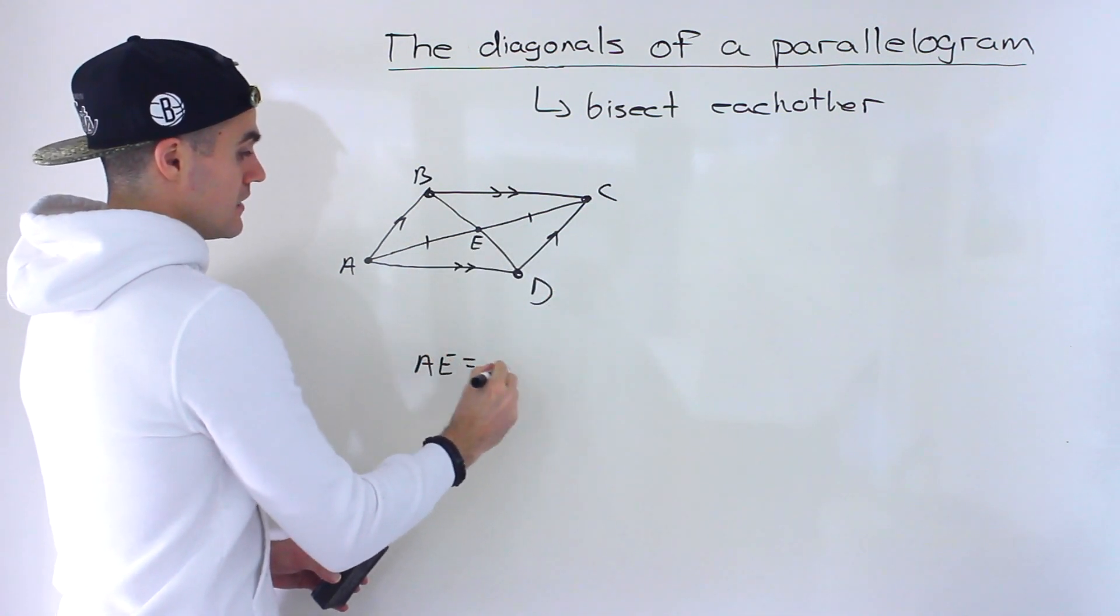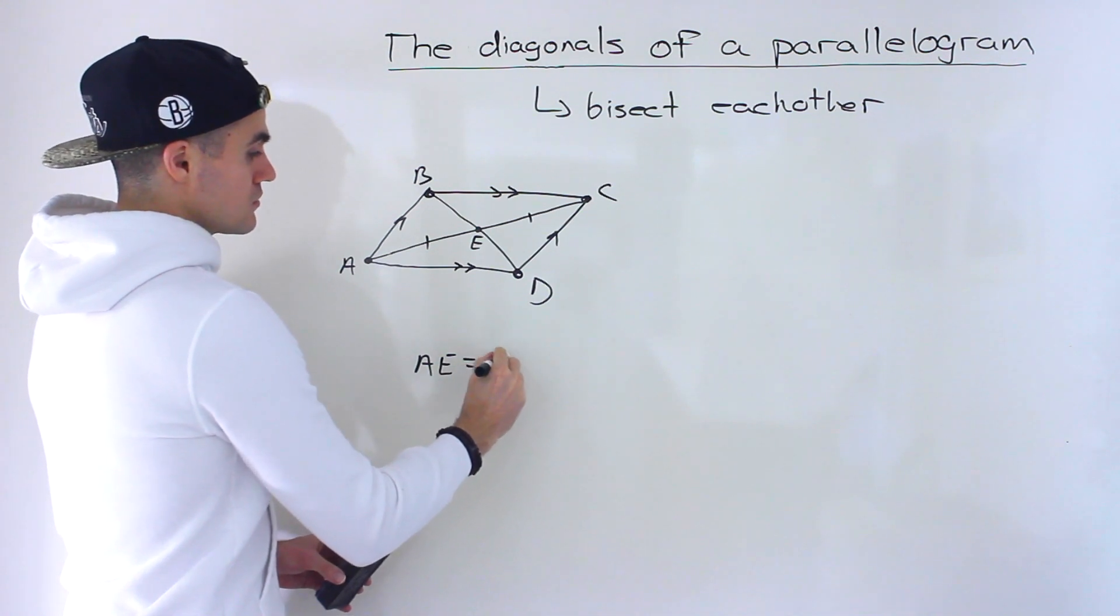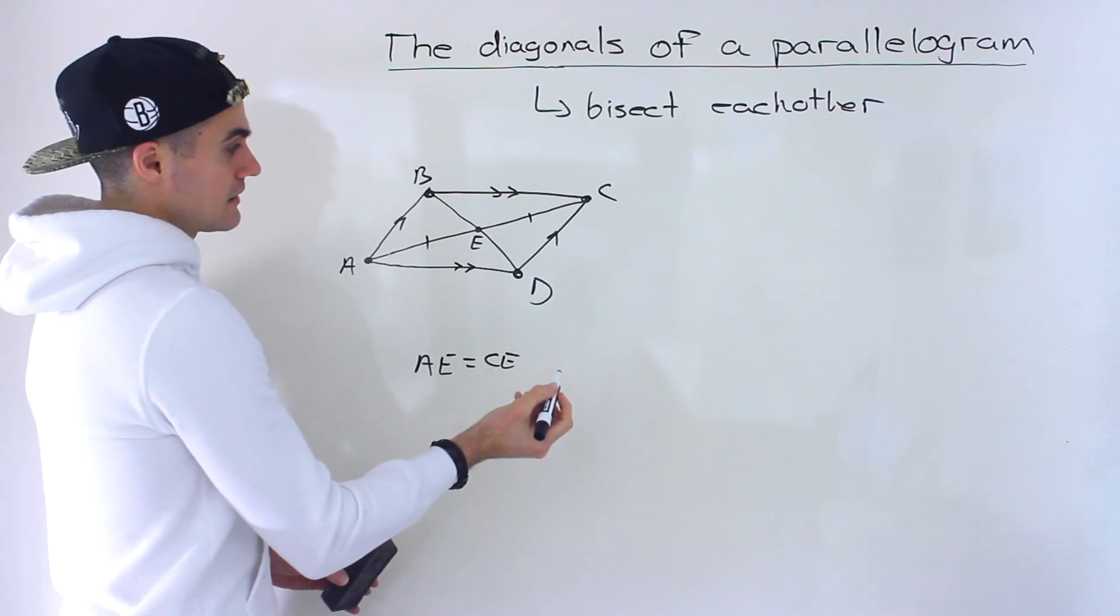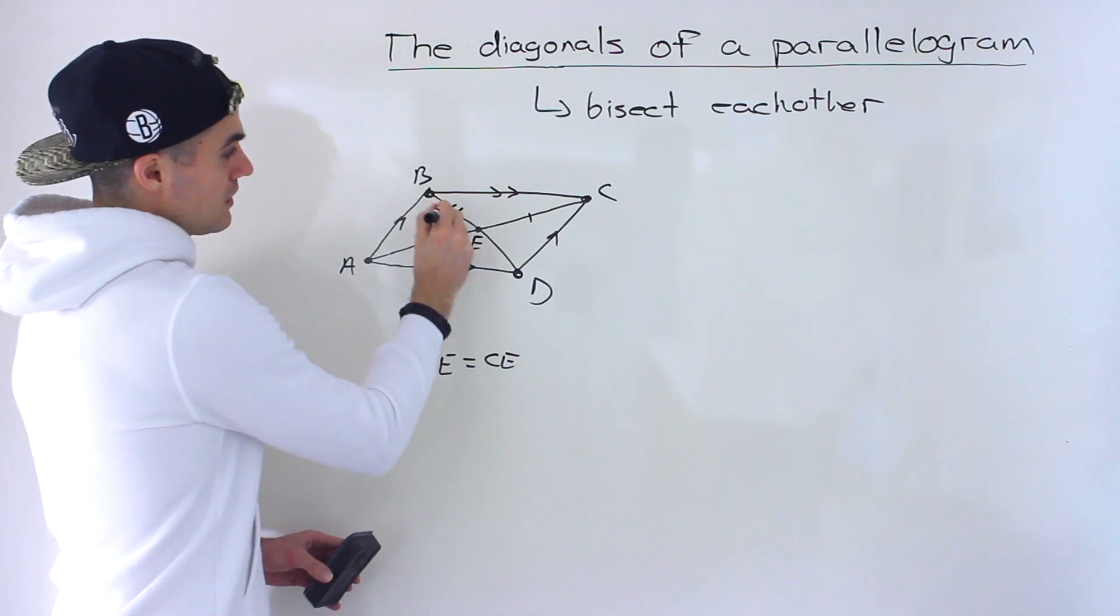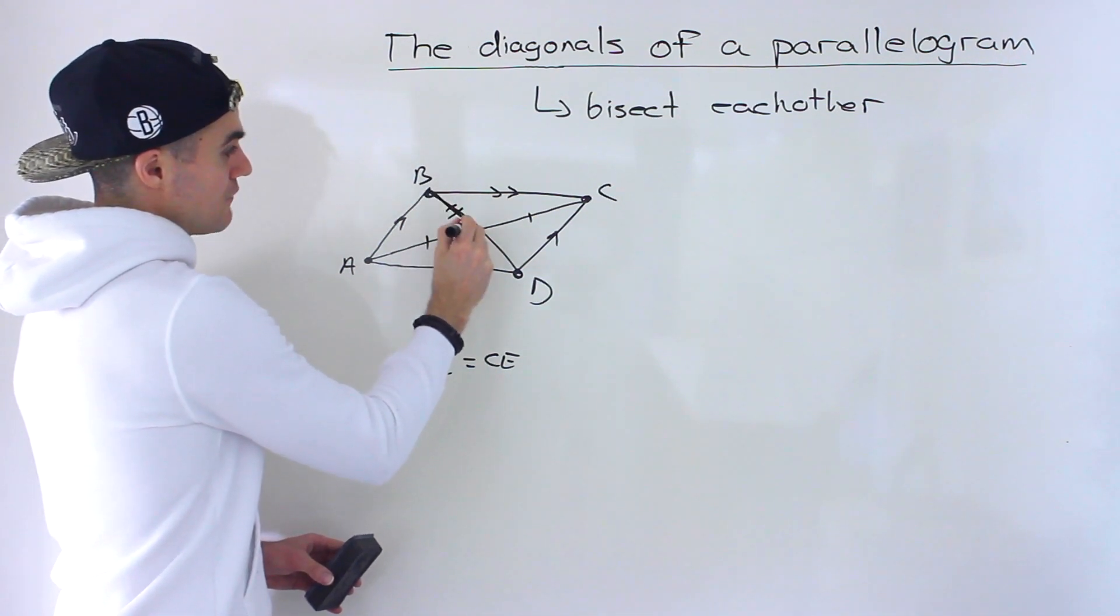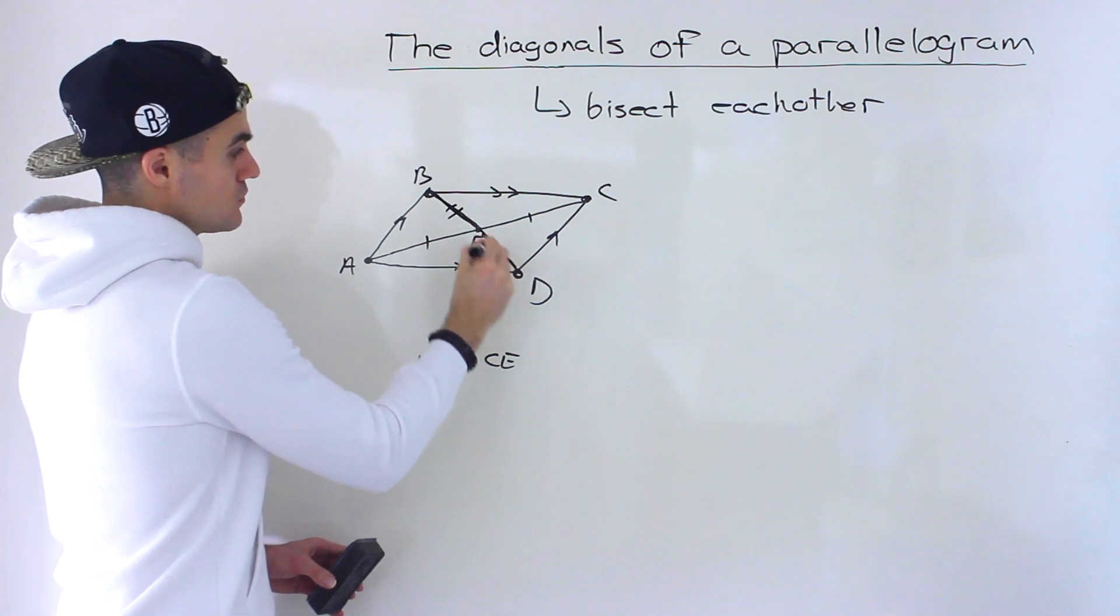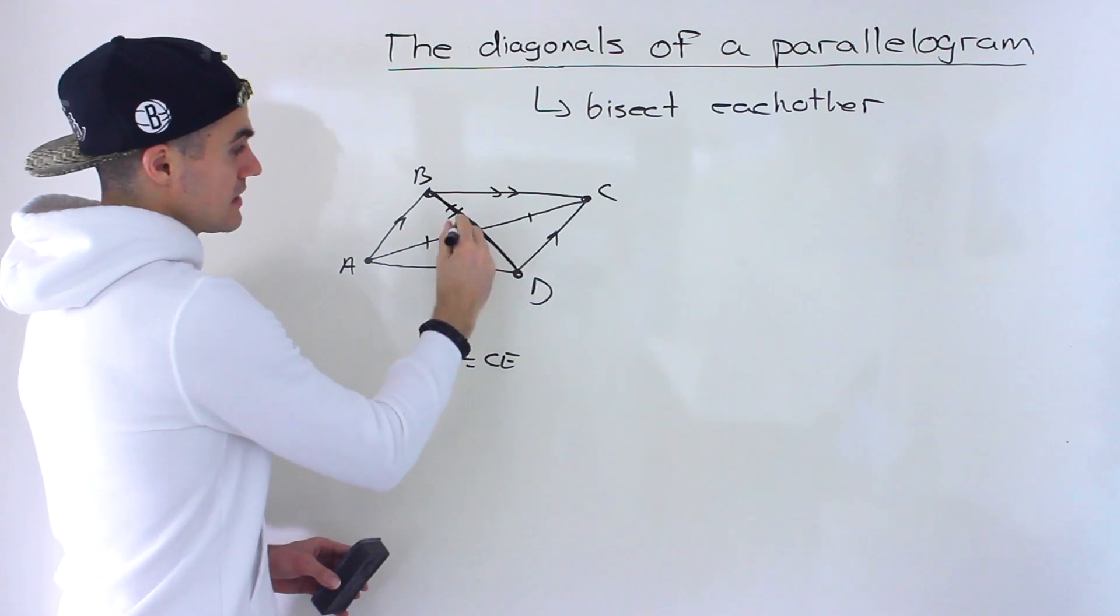We could say AE is equal to CE, right, the length of them. And then the length of BE over here, right, this half of this diagonal, is equal to the length of ED or DE.